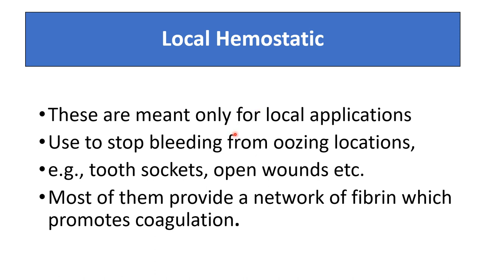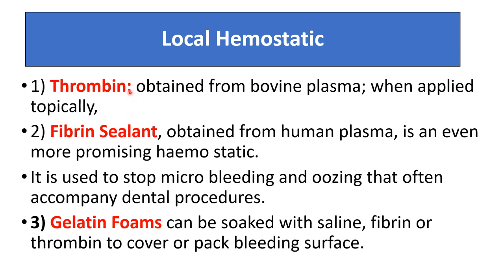Local hemostatics are meant only for local application and are used to stop bleeding from oozing sites, tooth sockets, and open wounds. Most of them provide a network of fibrin which promotes coagulation. Thrombin, obtained from bovine plasma, is applied topically. Fibrin sealants obtained from human plasma are an even more promising hemostatic, used to stop microbleeding and oozing accompanying dental procedures. Gelatin forms can be soaked with saline, fibrin, or thrombin to cover bleeding surfaces.